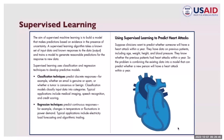The second type of supervised learning is the regression technique. Regression predicts continuous responses — an example would be changes in temperature or fluctuations in power demand. Typical applications of this technique include electricity load forecasting and algorithmic trading.